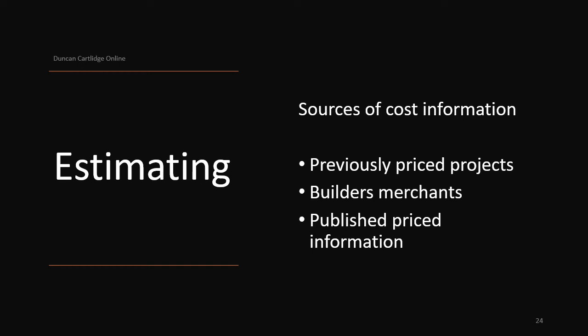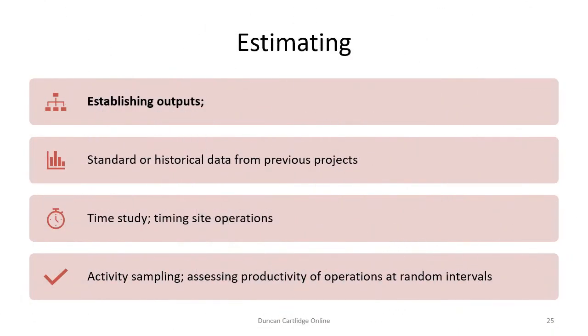So where does the information come from to price a new job? The most accurate source of information is probably from previous projects that have been priced by yourself and have been successful. Prices can also be sourced from builders merchants online and published price books, the most popular of which is known as Spons. When considering labour rates, the first thing to establish are labour outputs — that's to say, how many bricks can a bricklaying gang lay in one hour, or how long does it take a plasterer to plaster one square metre of blockwork? This sort of data can be determined from historical site records.